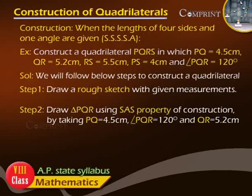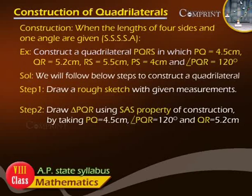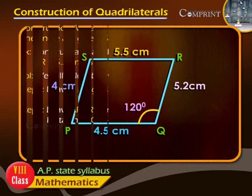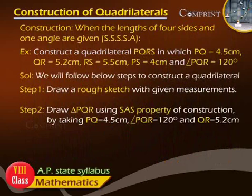Construction when the lengths of four sides and one angle are given. Construct a quadrilateral PQRS in which PQ = 4.5 cm, QR = 5.2 cm, RS = 5.5 cm, PS = 4 cm, and angle PQR = 120 degrees. Step 1: Draw a rough sketch with the given measurements.